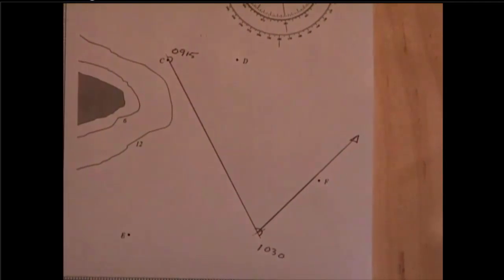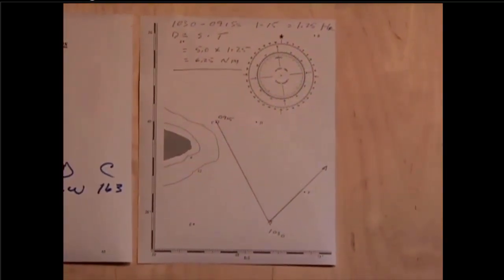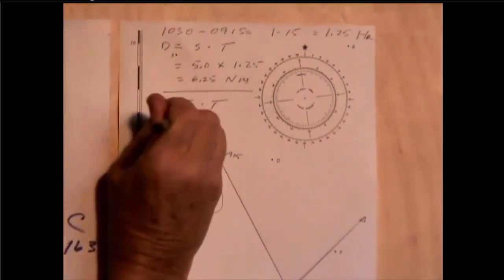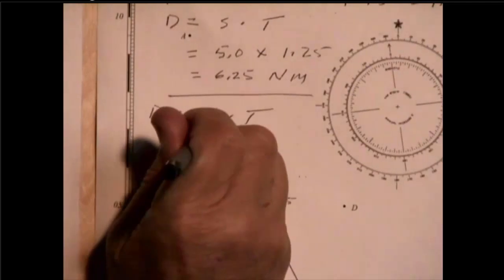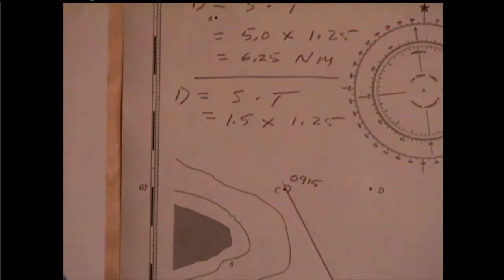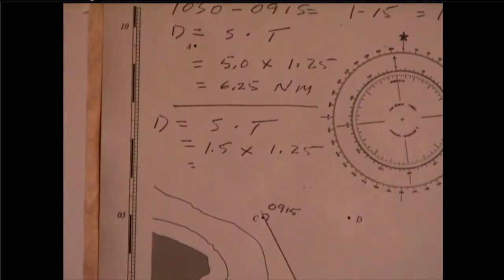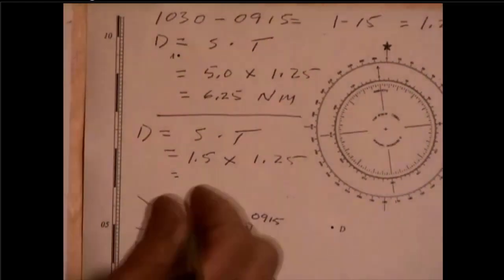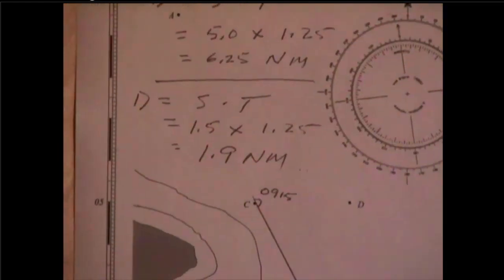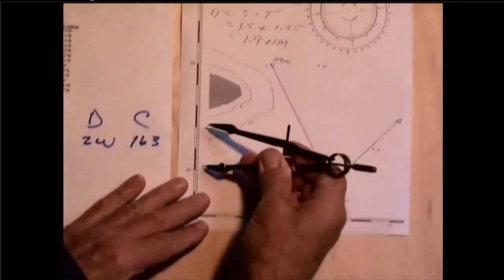The next part is that the current was flowing at 1.5 knots. So here again, let's look at the distance that the current has pushed us in an hour and a quarter. D equals speed times time. The speed here is the speed of the current, 1.5 knots, times 1.25 hours. 1.25 times 1.5 becomes 1.9 nautical miles. So the current has pushed us 1.9 nautical miles.